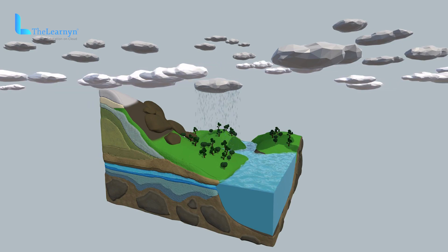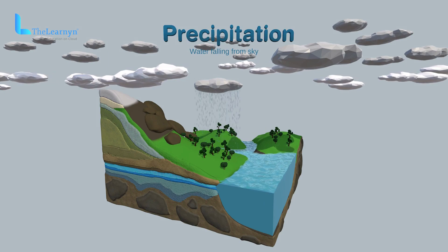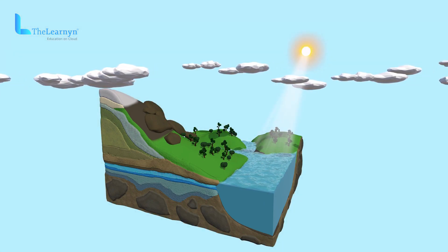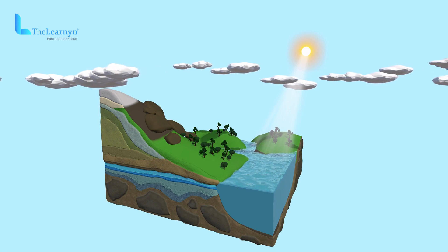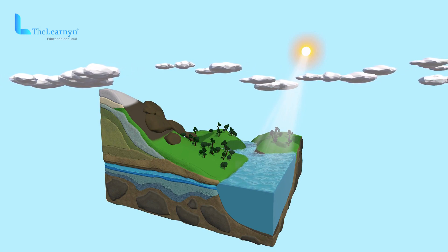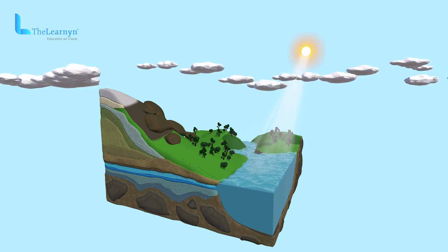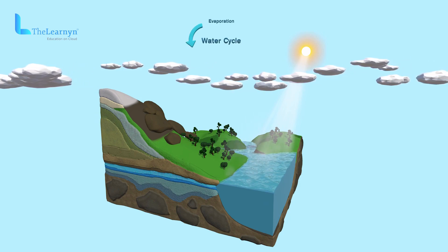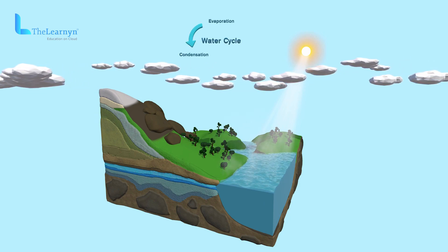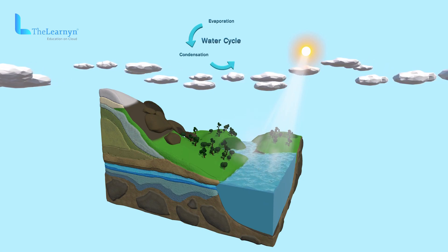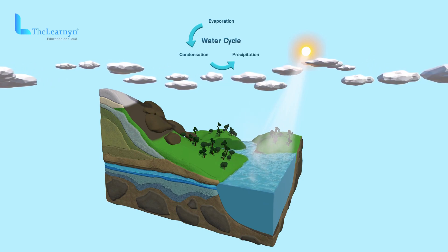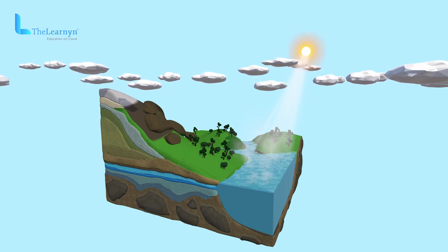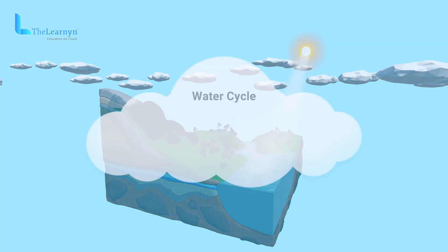This process is called precipitation. When the sun shines on them, the whole process happens again. This whole process is called the water cycle and keeps the water moving from the ground to the sky, filling the water needs of plants, animals, and people to survive. Let's summarize the steps of the water cycle.